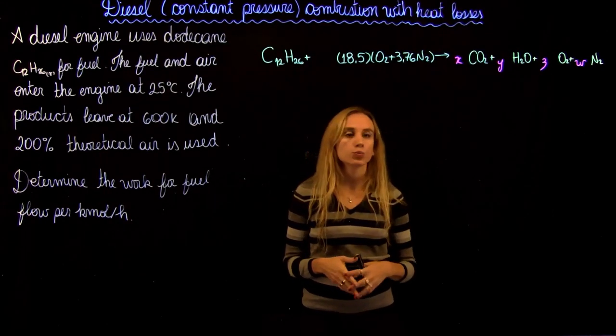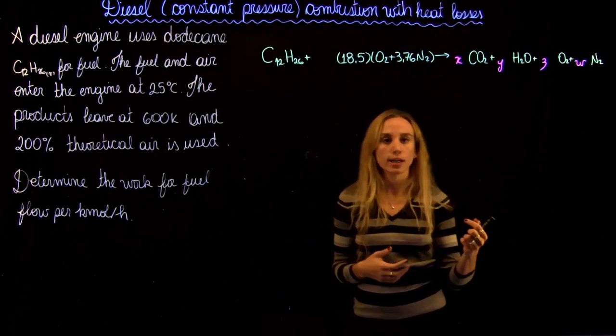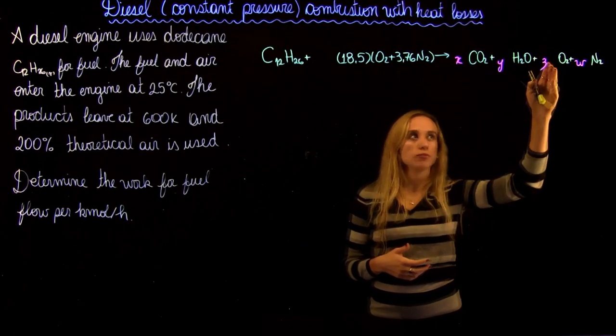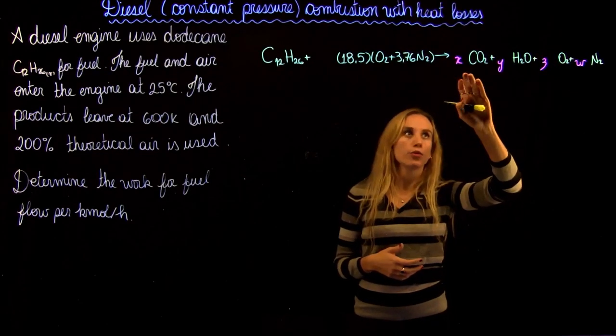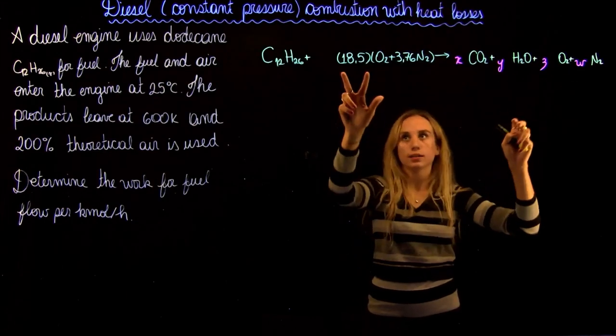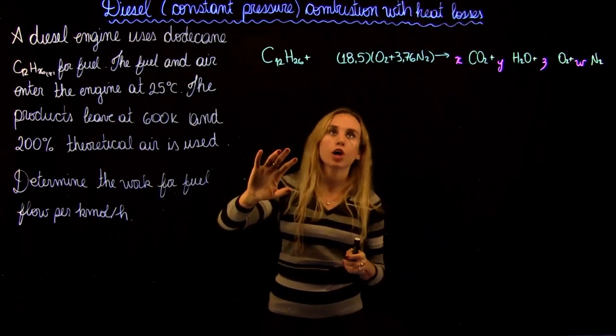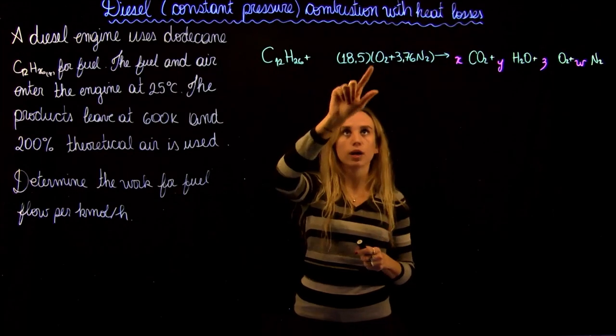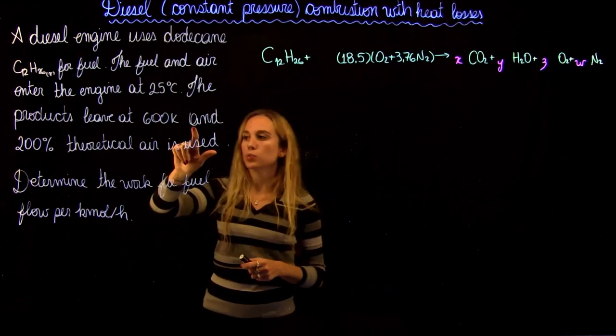So what we have to do is we first assume that for theoretical air, there's no oxygen in the product. And we're going to have coefficients 1, 2, 3, and this amount. We're going to be able to solve. And if we do that, we're going to find 18.5.